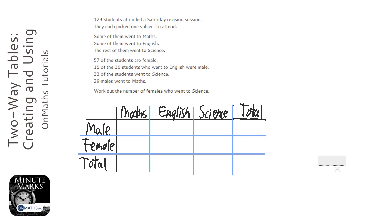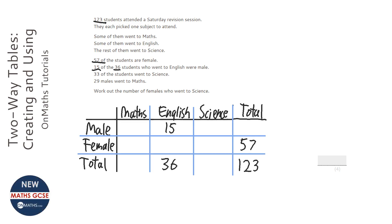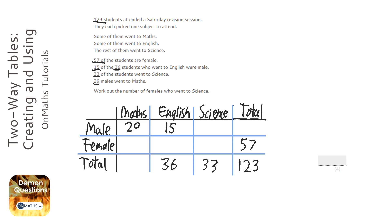The absolute total is 123, and we're just going to go through it and fill in the bits we do know. So 57 of the students are female. 15 of the 36 students who went to English were male, so there's 36 students who went to English and 15 of them were male. 33 students went to science, and 29 males went to maths.